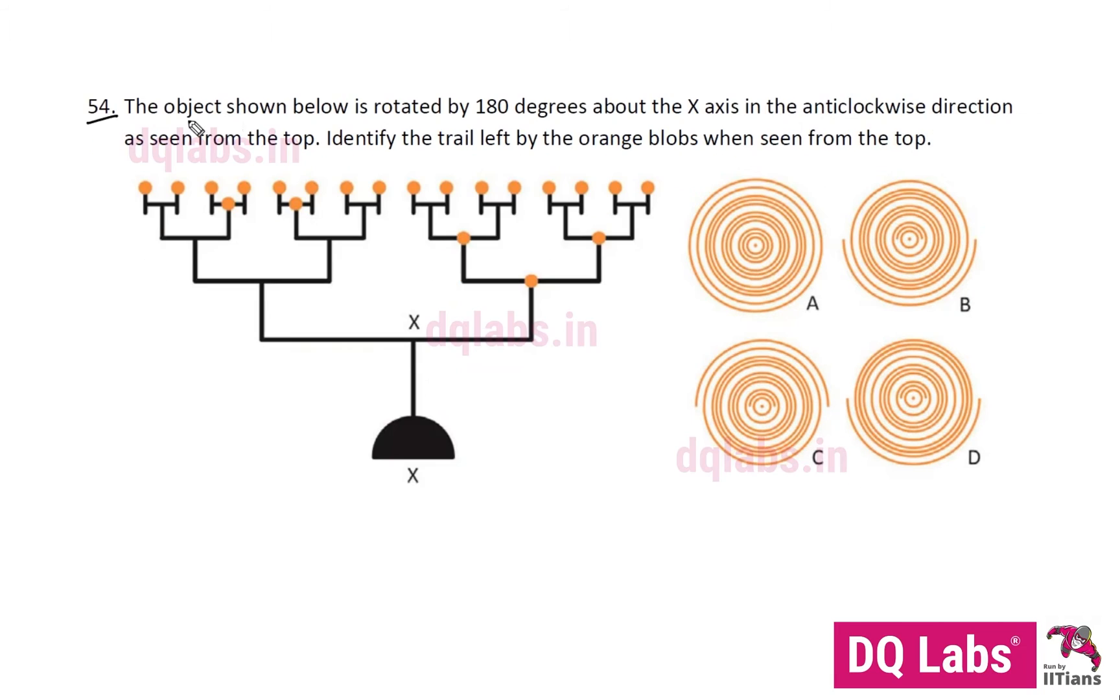Question number 54: The object shown below is rotated by 180 degrees about the x-axis in anticlockwise direction. Anticlockwise is this way, so it moves like this as seen from the top. We need the top view. Identify the trail left by the orange blobs when seen from the top.